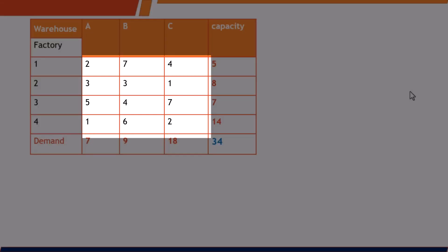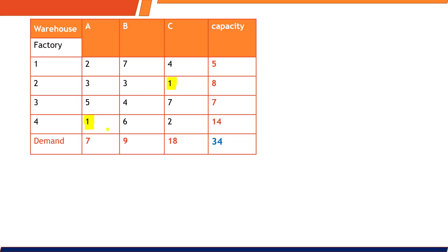Now that we've confirmed it's balanced, start allocation from the cost matrix. Identify the least cost — here it is 1, and there is another 1 as well. We always start allocation on a first-come-first-serve basis, so we start with the first cell with cost 1. The demand is 18 and the capacity is 8, so we can supply only 8 units. This cell's capacity becomes 0 and the demand reduces from 18 to 10.